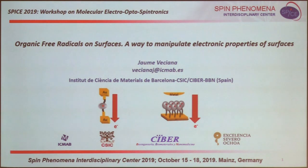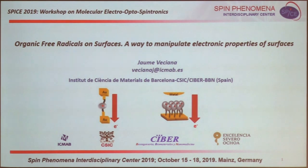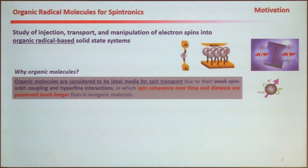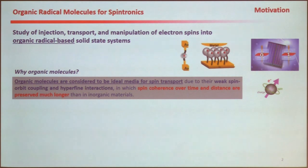Let me start explaining the motivation of our work. The use of organic radicals — our motivation is to use such molecules for spintronics. Why are we interested? Because they are organic molecules, and they show weak spin-orbit coupling and hyperfine interactions, for which it is expected that spin coherence over time and distance will be longer than in inorganic materials.